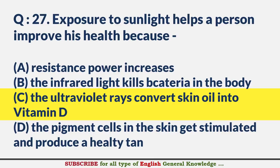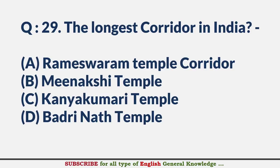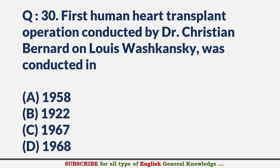A geostationary orbit is at a height of? — Answer D: 36,000 km. The longest corridor in India? — Answer A: Rameswaram Temple Corridor. The first human heart transplant operation conducted by Dr. Christiaan Barnard on Louis Washkansky was conducted in? — Answer C: 1967.